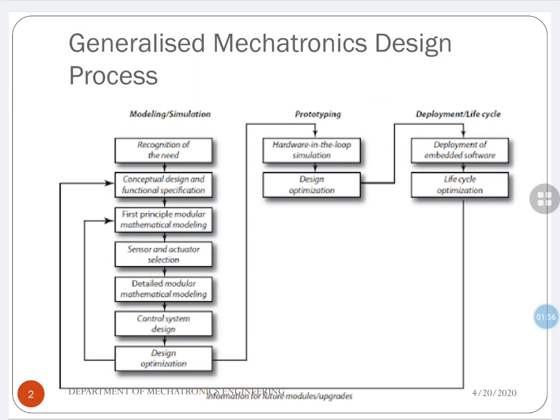Going into modeling and simulation, the first thing is: what is the purpose of this project? That should be very clear when the designer starts to design the system — that step is the organization of the need. The next step is conceptual design and functional specification: for a particular need there may be many concepts, so you should list all concepts and identify which best suits your application.